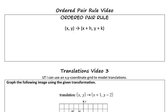When we see this ordered pair rule, XY goes to the quantity X plus H, Y plus K, this is referring to a translation. Taking a look, we may ask ourselves, what is this plus H and plus K actually refer to?